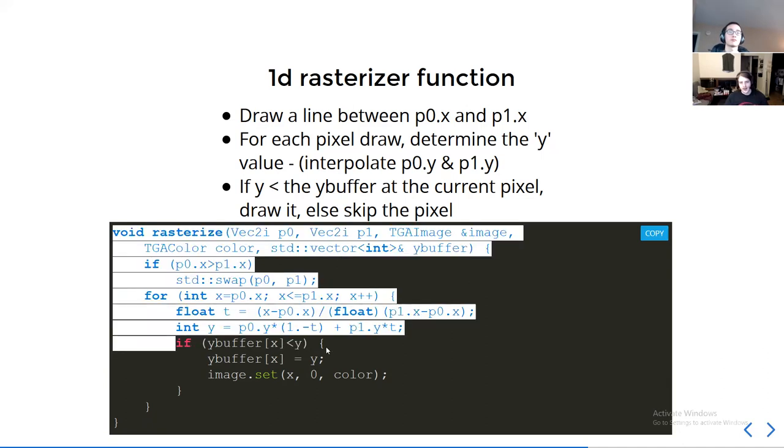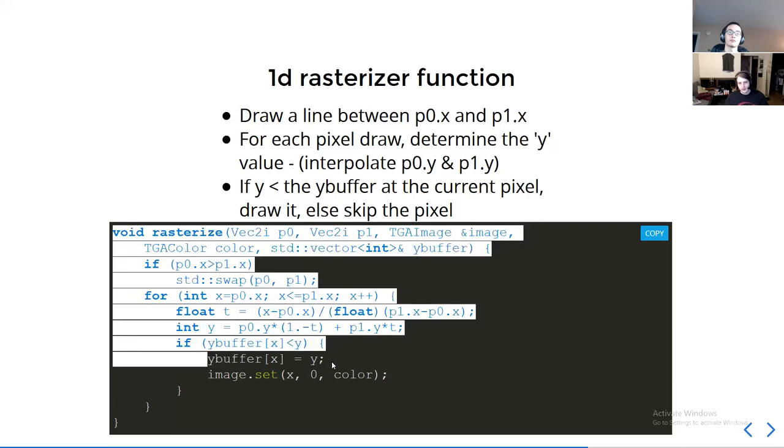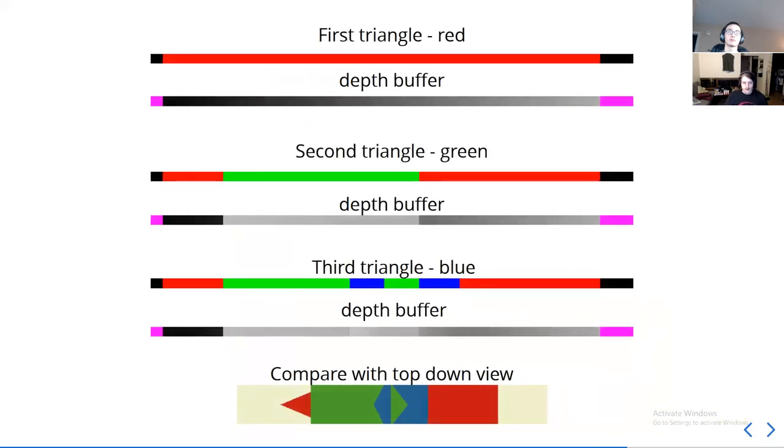Then we check, is our Y value greater than the current Y value in the scene? And since X is a positional coordinate, that means we can just index into the Y buffer using that. And then if it is greater than, then we change the Y buffer to that value, and then set our pixel to the color. So this logic will only run when the new pixel being drawn is closer to the camera. That was a whole lot of words that didn't make much sense. Hopefully this picture makes it a little simpler.